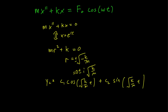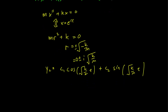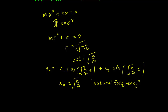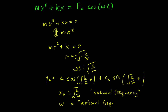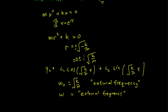This implies that our complementary solution is c1 cosine(√(k/m)·t) plus c2 sine(√(k/m)·t). Let's define this term as our natural frequency: omega0 equals the square root of k over m. This is called our natural frequency, and that's to contrast with omega, which is our external frequency — the omega in the external force.